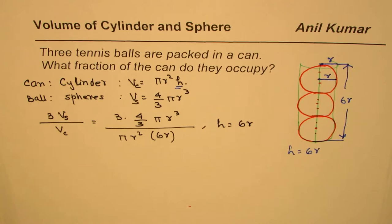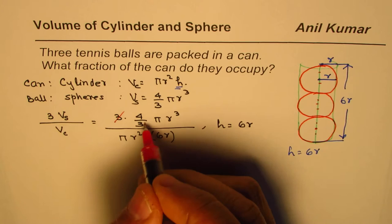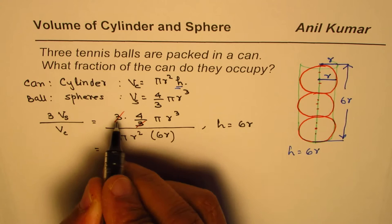Since height equals six times r, we just calculated it. Now this equation has to be simplified, so this is an exercise to simplify this kind of equation.